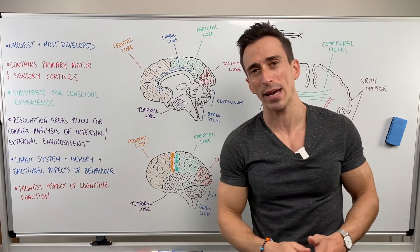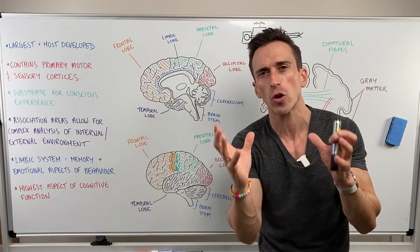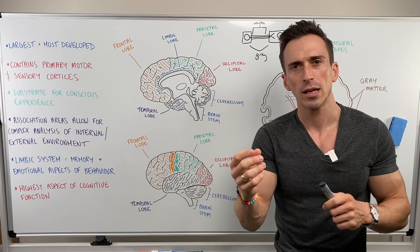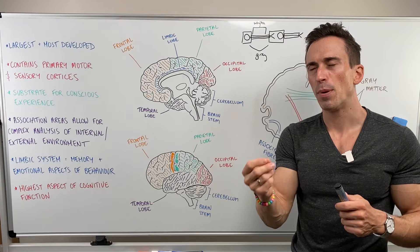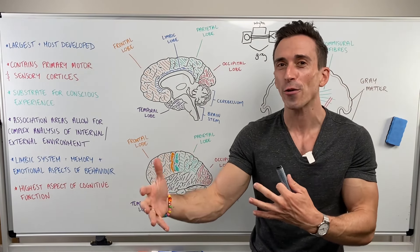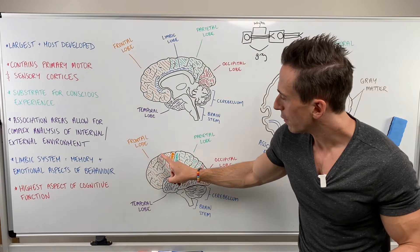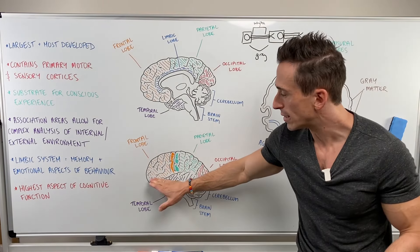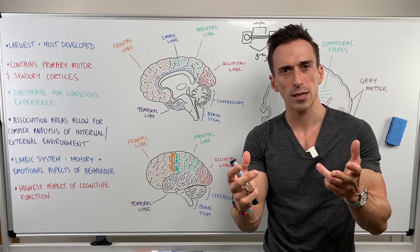The cerebral hemisphere is also the highest aspect of cognitive function. When we look at cognitive function, we're thinking about planning, judgment, emotion, making sense, being reasonable, and making sure that your behavior is appropriate for the scenario you're in. Most of this sits within the frontal lobe, specifically an area called the prefrontal cortex. If that area is damaged, we have issues with behavior and planning.